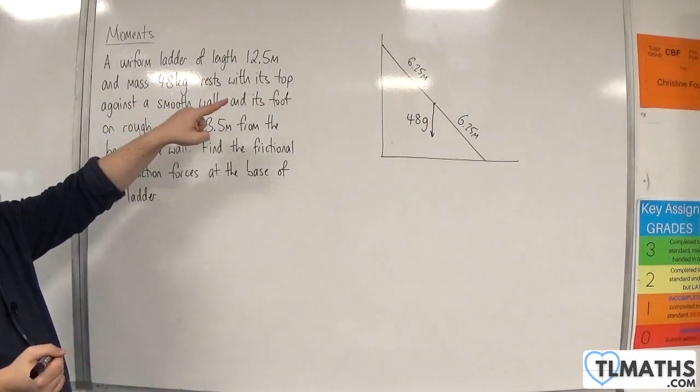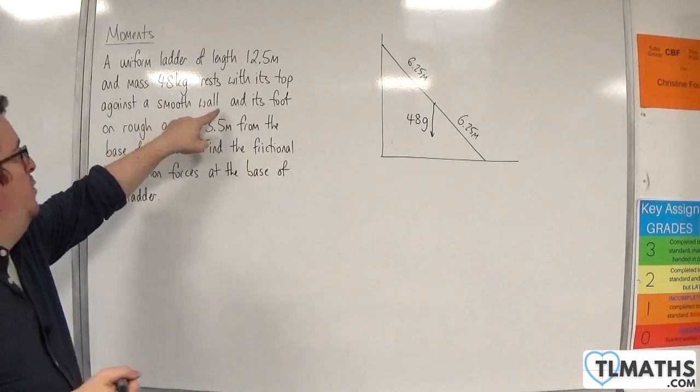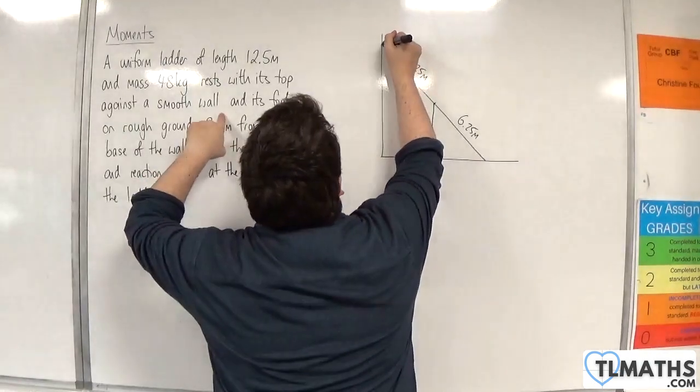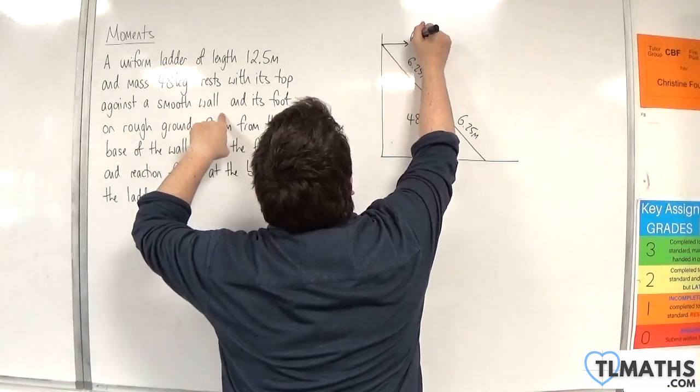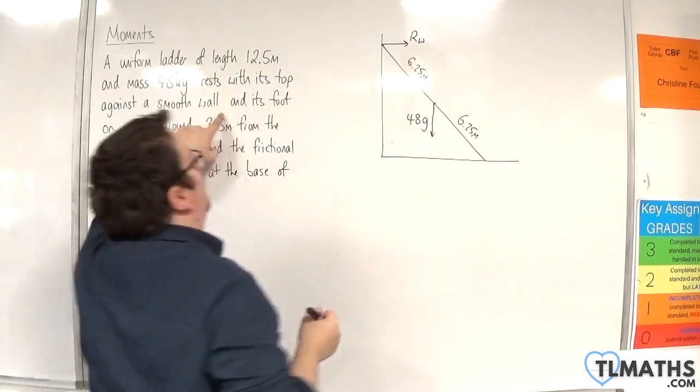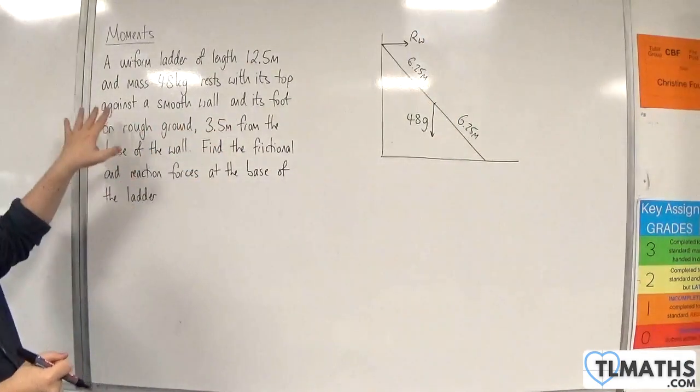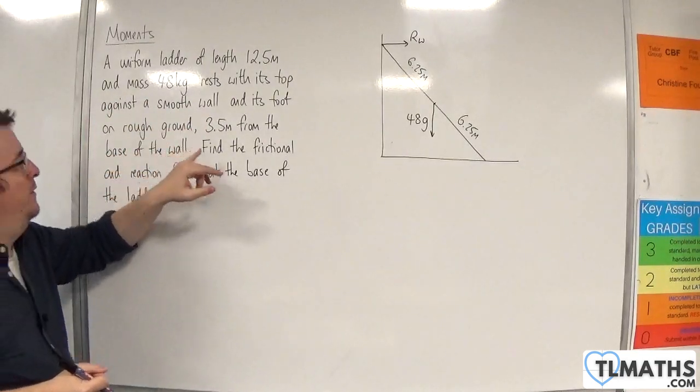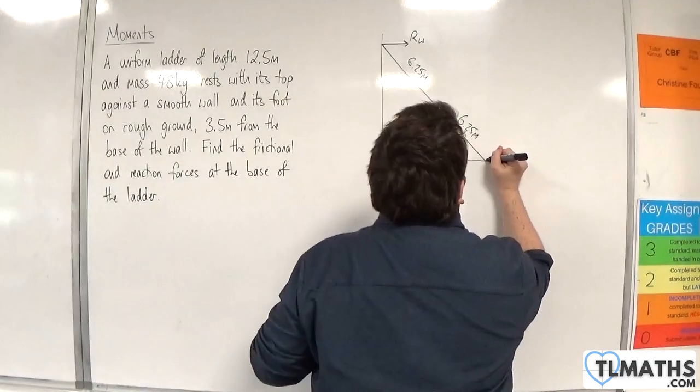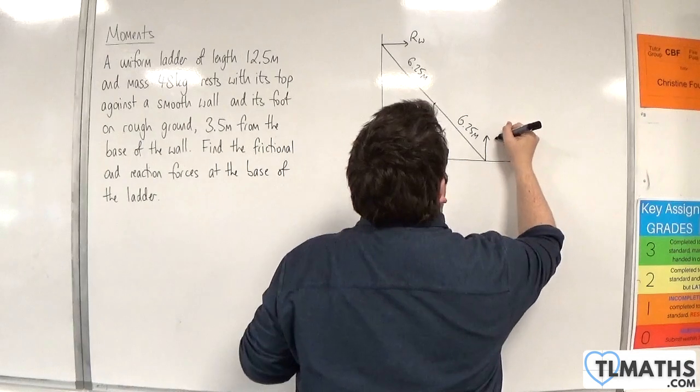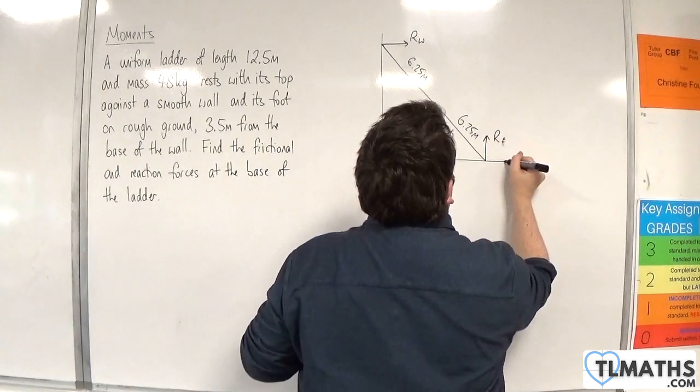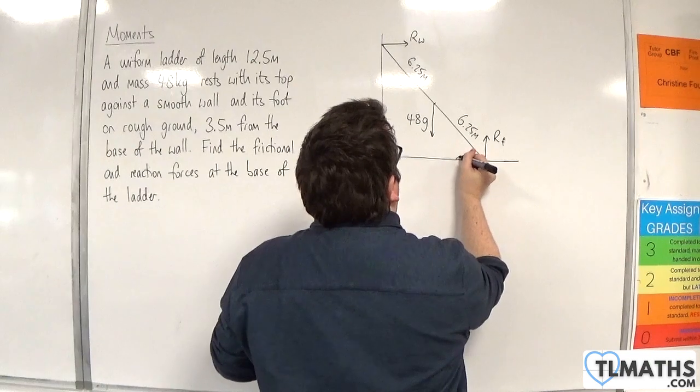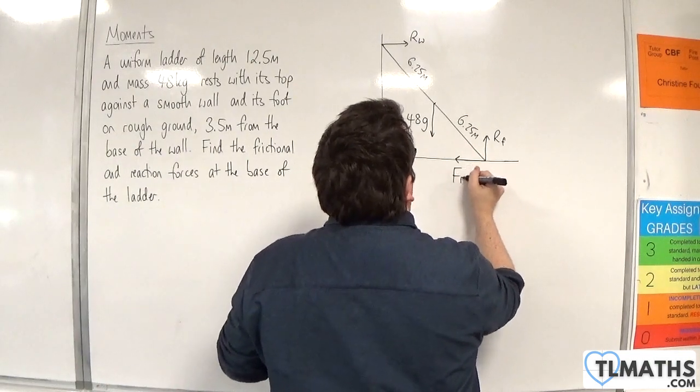Now it's resting with its top against a smooth wall. There will be a normal reaction force here, Rw, but there's no frictional force. Its foot is against rough ground, so there will be a normal reaction force, Rf, and a frictional force which is going to be acting to the left, and so I'll call that Fr.